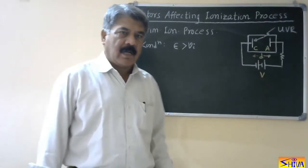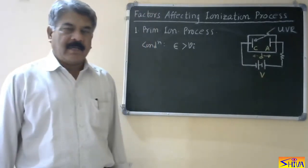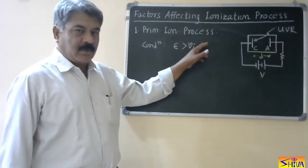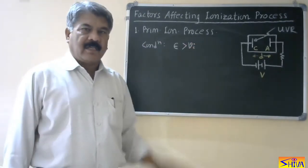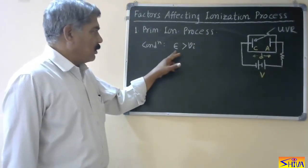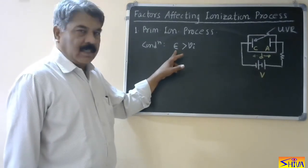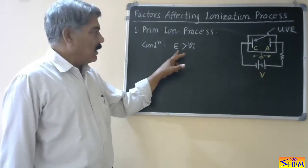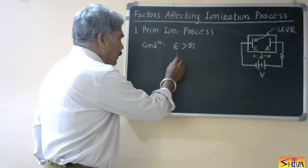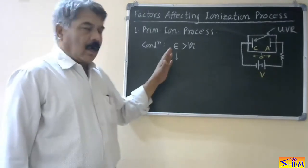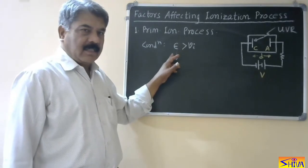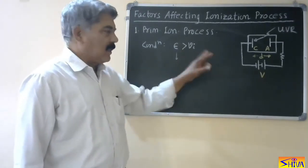This process is cumulative, and finally we have a large number of electrons — there is breakdown. This is the primary ionization process, also called ionization by collision. Now let us see what factors affect this primary ionization process. The condition is ε > Vi, where ε is the kinetic energy of the electron and Vi is the ionization potential. All factors which govern the kinetic energy of this electron will affect the ionization process.